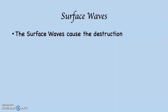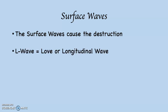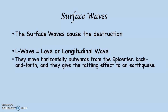There are two types of surface waves. The first is the L wave, or Love wave, or longitudinal wave. Longitudinal means it's going along the surface, like longitude does. Love is because in science, when you discover something, it gets named after you. The characteristics of the L wave are that they move horizontally outwards from the epicenter — back and forth, not up and down — and they give the rattling effect to an earthquake.